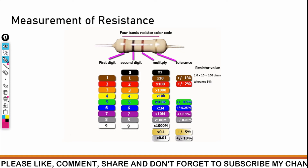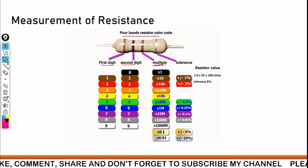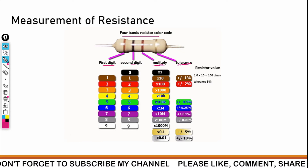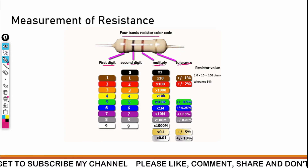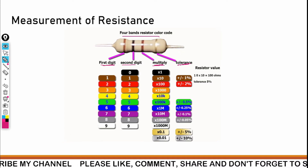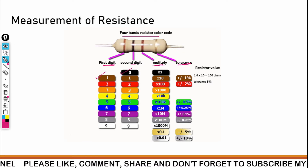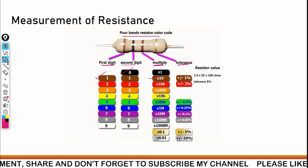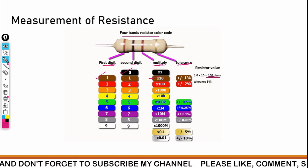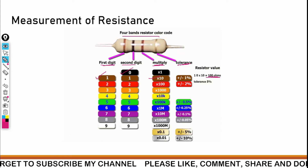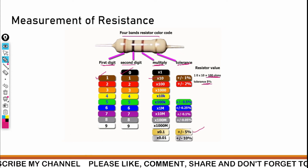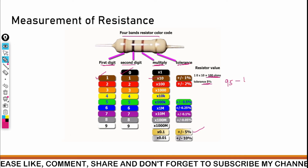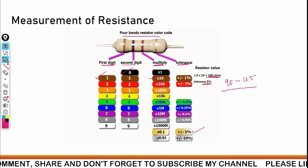For a four-band resistor color code, the first is first digit, second is second digit, third is multiplier, and fourth is tolerance — which was absent in the three-band and considered as none giving 20 percent. Here first is brown, second is black, third is brown — so 10 multiplied by 10 equals 100 ohm — and tolerance is silver. Silver has a tolerance of plus or minus 10 percent, so the value is 100 ohm plus or minus 10 percent, meaning between 90 to 110 ohm.